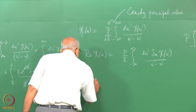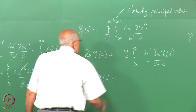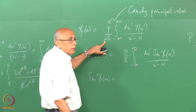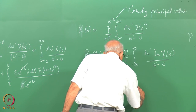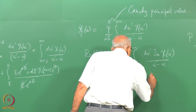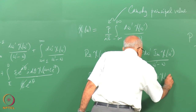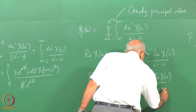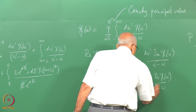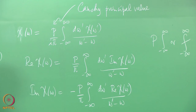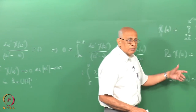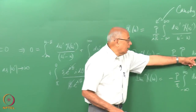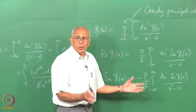Similarly, the imaginary part of chi(omega) equals minus P over pi times the integral from minus infinity to infinity of d omega prime times the real part of chi(omega prime) over omega prime minus omega. This is the reason the susceptibility cannot be purely real or purely imaginary: if it were, being an analytic function it would vanish identically. You cannot have the real part identically zero or the imaginary part identically zero, because then the whole thing is zero.